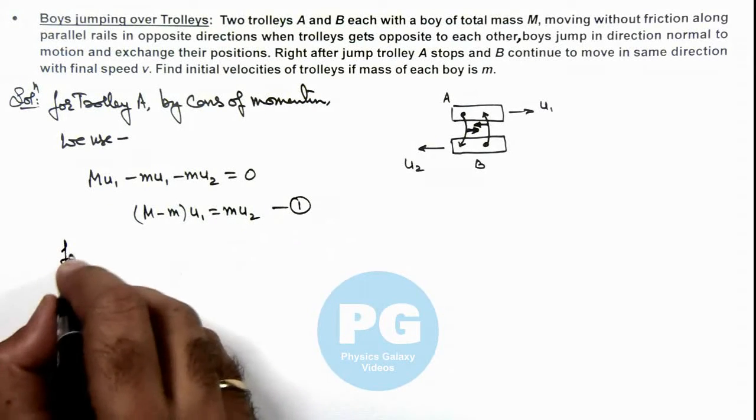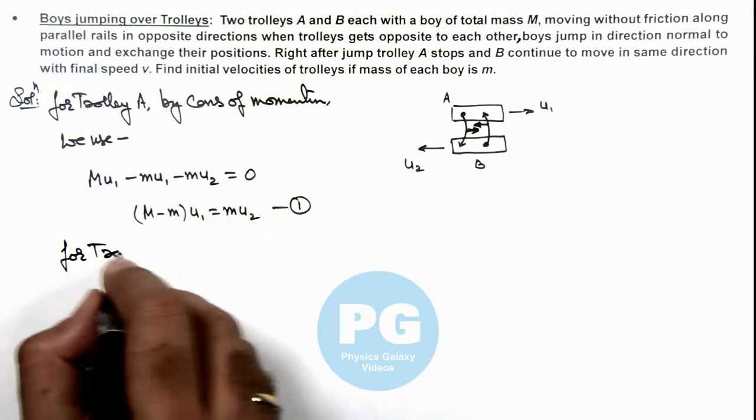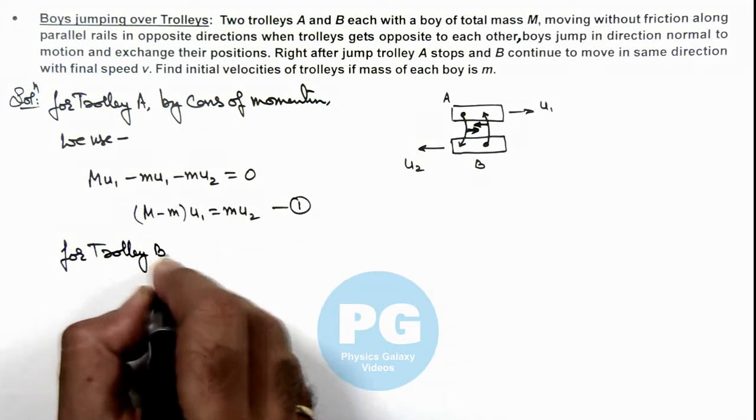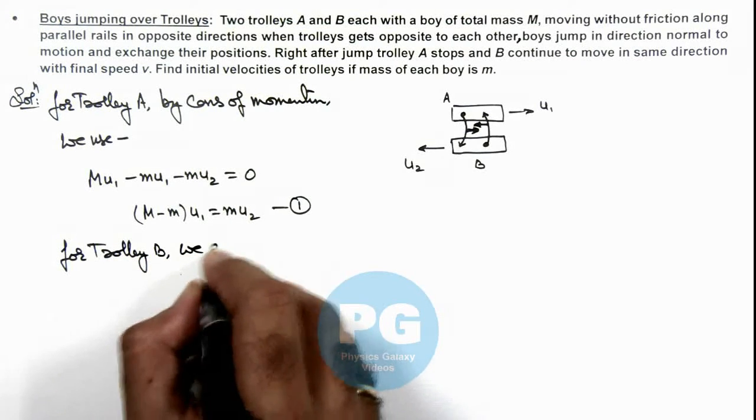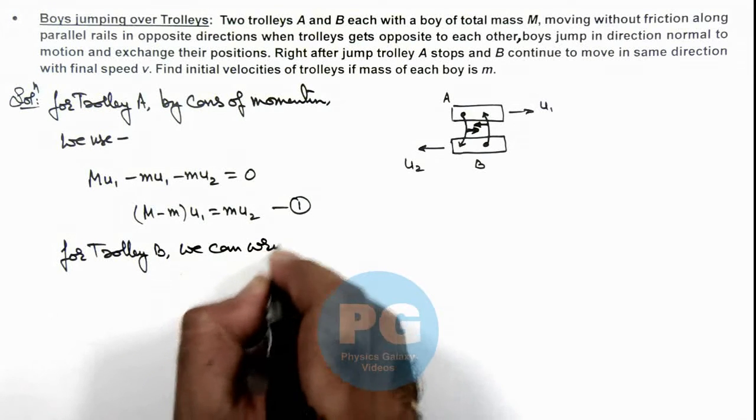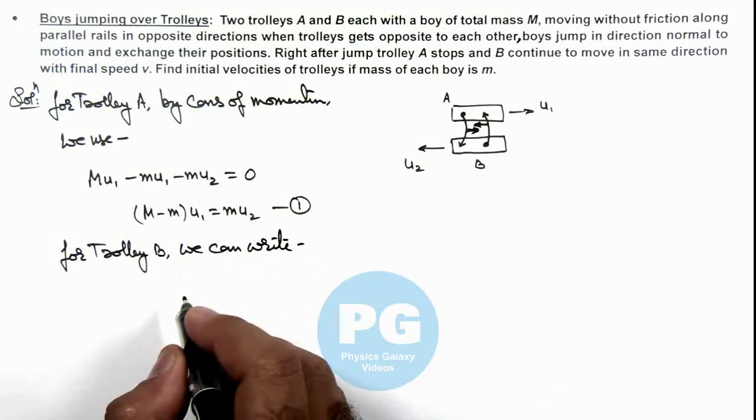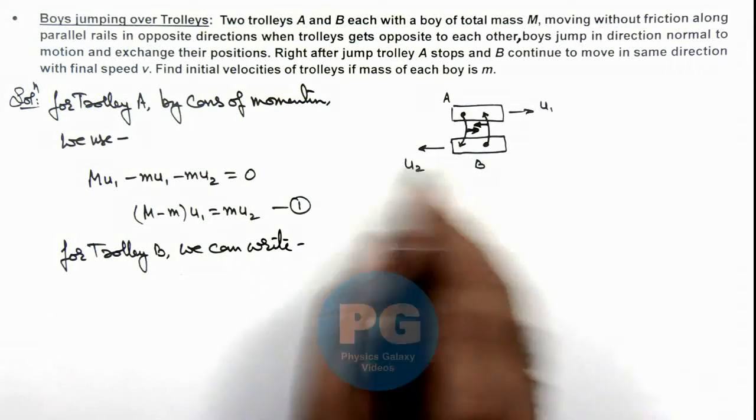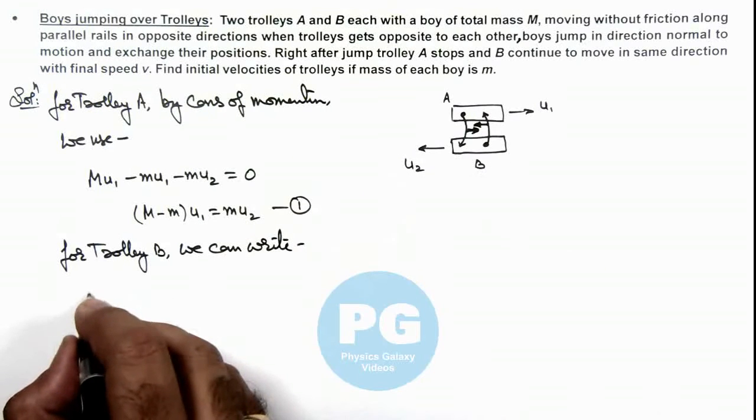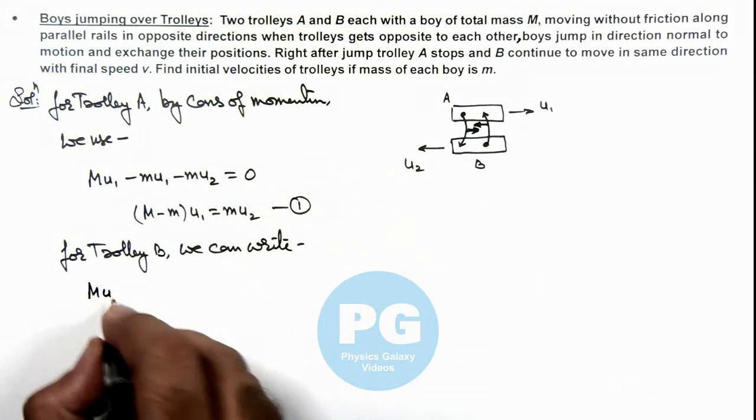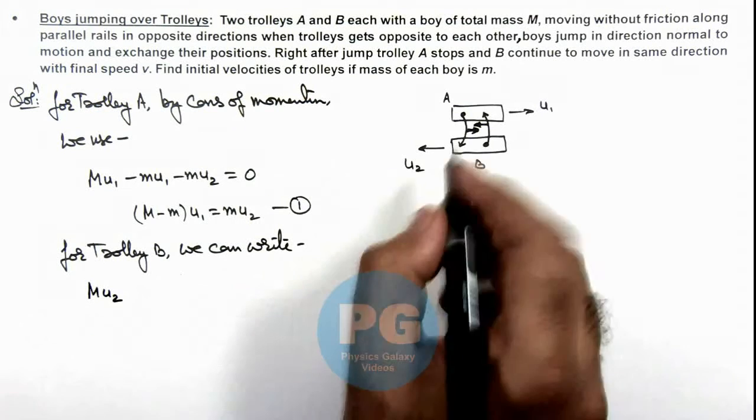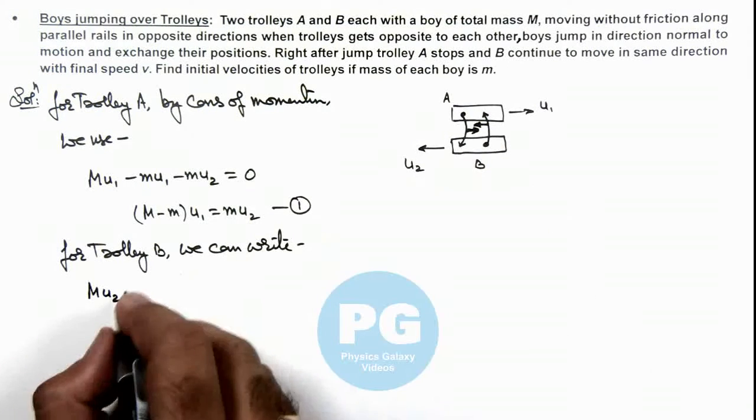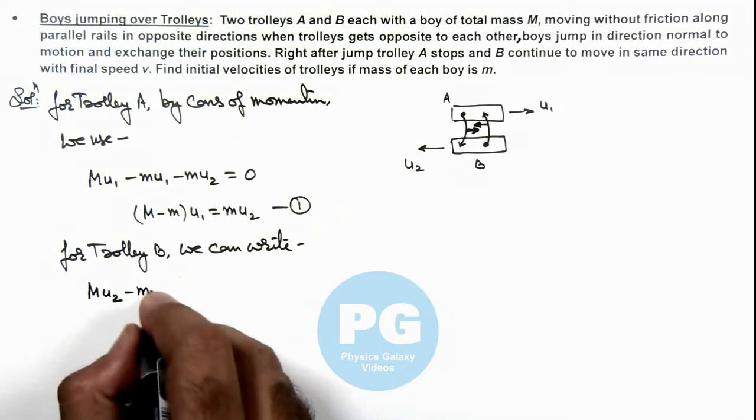And similarly for trolley B, we can write the same equation of momentum conservation. As it was moving toward left with the speed u2, so its momentum was M·u2. The boy of B when jumps off, it carries a momentum minus m·u2.